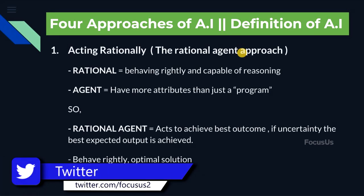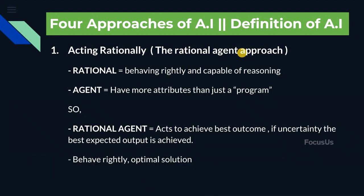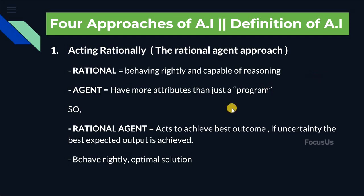The first point we have here is acting rationally, which is also known as the rational agent approach. First of all, we need to know what 'rational' and 'agent' mean. Rational means behaving rightly and being capable of reasoning, whereas an agent is simply something that acts. But the computer agent we are talking about here is expected to have more attributes than just a program.